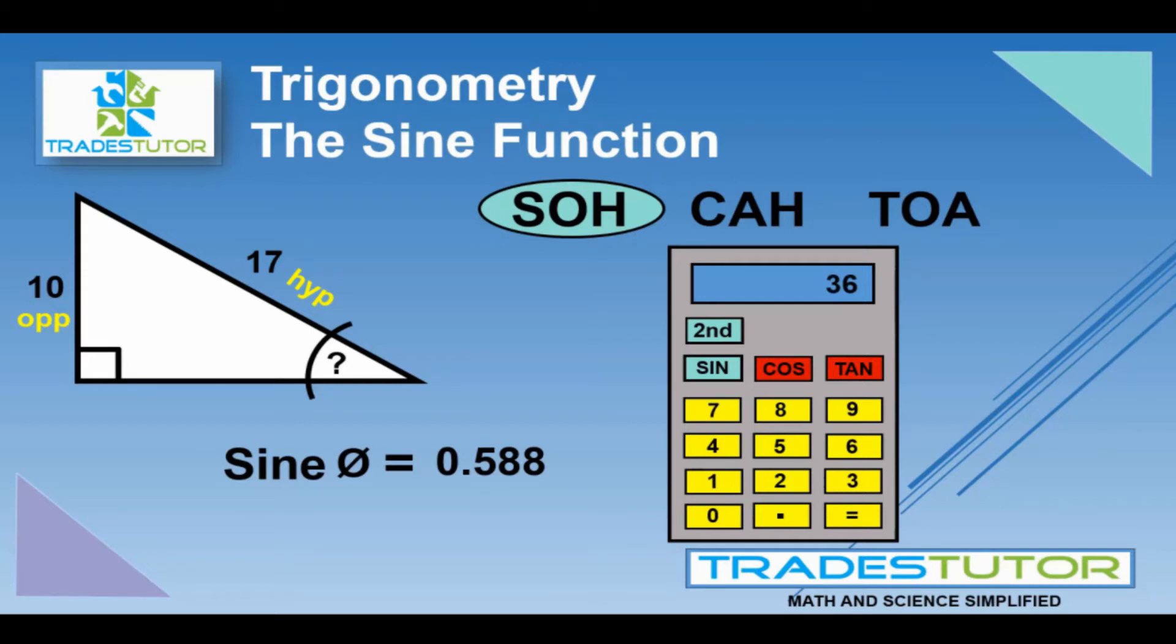It's as simple as that. By going 10 divided by 17 to get 0.588, that's the relationship between the two sides. You plug that number into your calculator, second function, sine, you get the angle of 36. It's not that hard once you get the hang of it. So that's finding the angle.